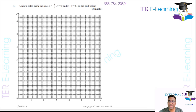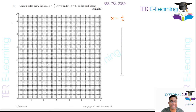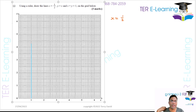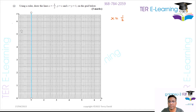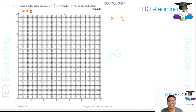Let's do the last part now. They said draw using a ruler. The first line is x is equal to a half. x equals a half is simply a vertical line that passes through the point x equals a half. So let's draw that vertical line — it passes through a half. This here represents the line x equals a half.